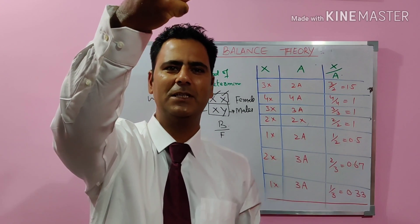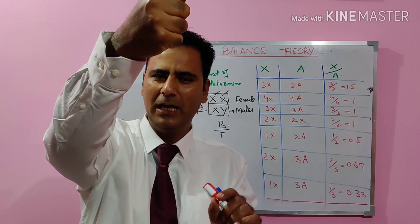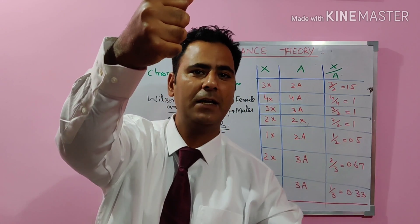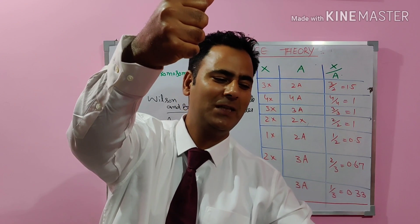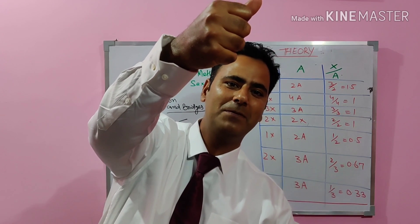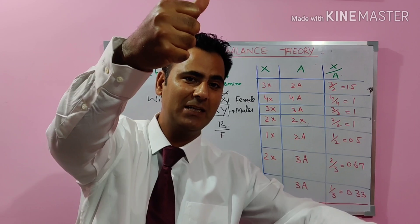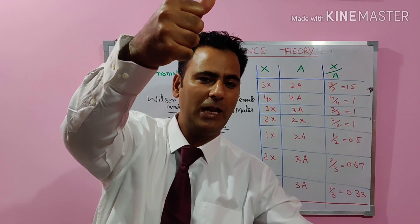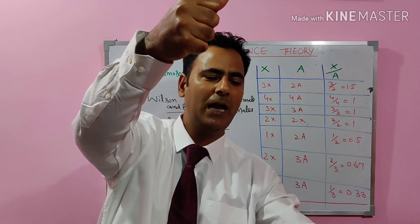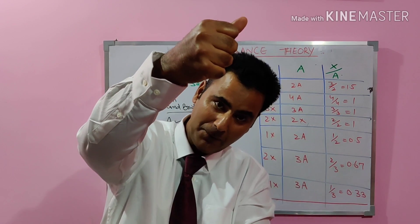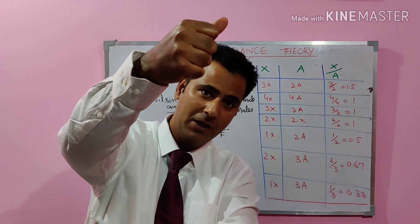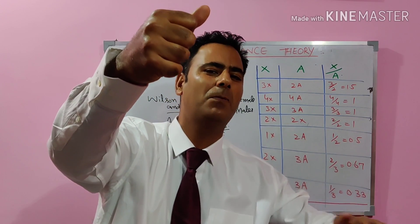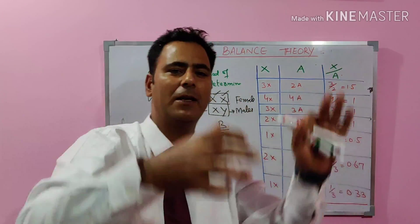If we add a weight of 10 grams on the left side, the balance will incline towards the left. Since we said the left represents femaleness, once we overweigh that side, the balance shifts toward femaleness and this individual is going to be a female — although it also has factors trying to make it male, the balance of genes has shifted towards femaleness.